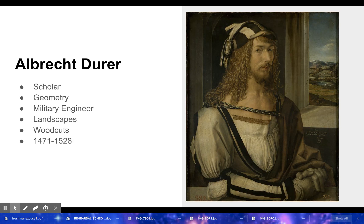Albrecht Dürer was a German artist we'll look at a lot. It's fun to compare him with da Vinci because he's often referred to as the da Vinci of the North. Like da Vinci, he was a Renaissance man — more than an artist. He was a scholar, he studied math, he was a military engineer, and he painted lots of landscapes. He made lots of woodcuts because now that the printing press came about, woodcuts were almost like a wooden stamp so that your artwork could be reproduced in pamphlets and books. He was alive between 1471 and 1528.